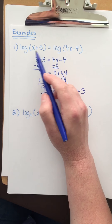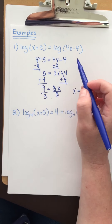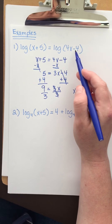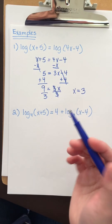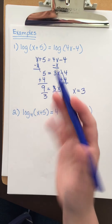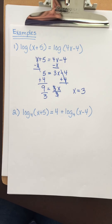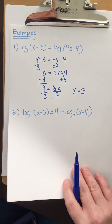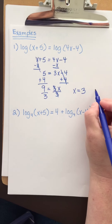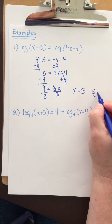If I plug that three in, three plus five is eight, and four times three is twelve minus four is eight. I can take the log of eight, and that's cool. So the solution is three.